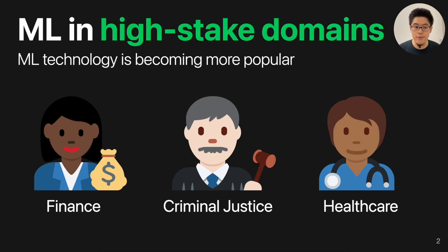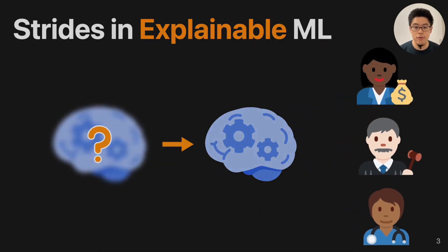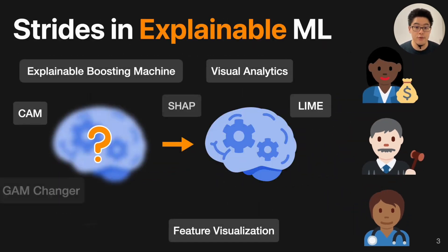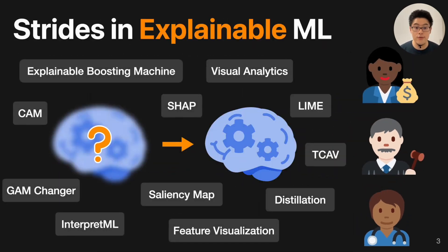As is well known, machine learning has been increasingly used in high-stake domains such as finance, criminal justice, and healthcare. And to promote responsible AI and machine learning, we have seen great strides in this area. Researchers have developed many techniques to explain machine learning predictions to gain users' trust.